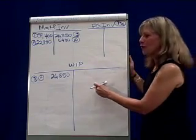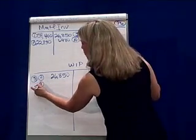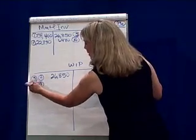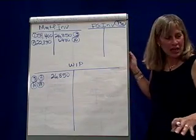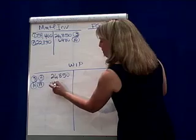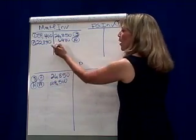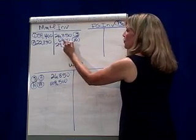Direct materials, though, goes into what? Work in process. And that was job A again, on the 10th, we requisitioned and used $29,510. So we debit work in process, credit material inventory.